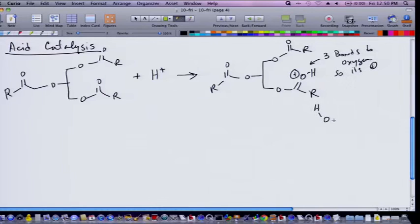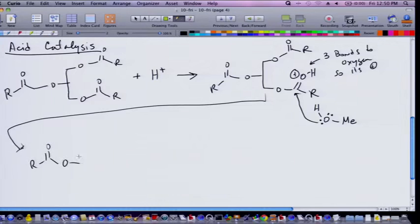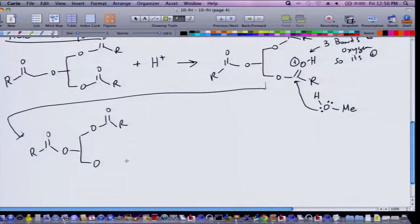And with this intermediate, I'll just make a note there. There's three bonds to oxygen, so it's positively charged. And so now our methanol can come in. And methanol has these unpaired electrons. And they like the situation. They can come in and react. So now you'll have the following intermediate, which is unstable again.